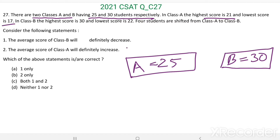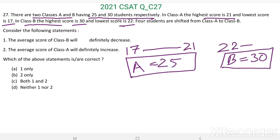The score in class A is varying from 17 to 21. In class B, the highest score is 30 and lowest score is 22, so the score is varying from 22 to 30.